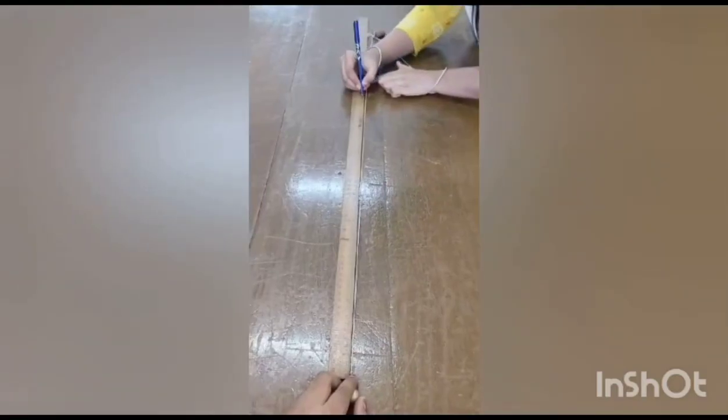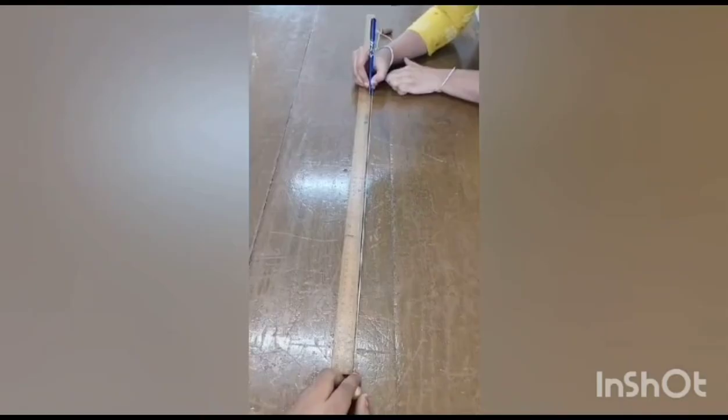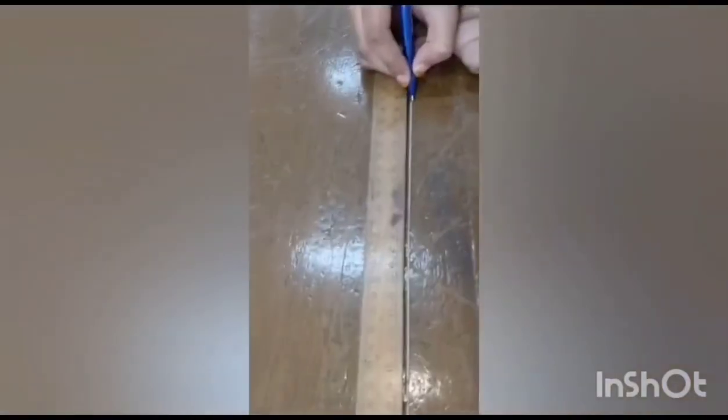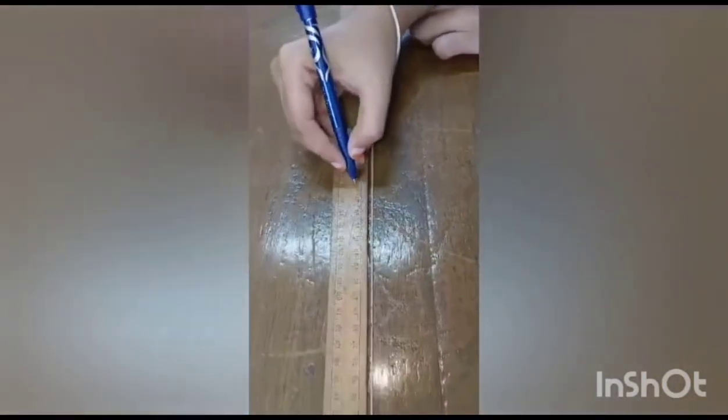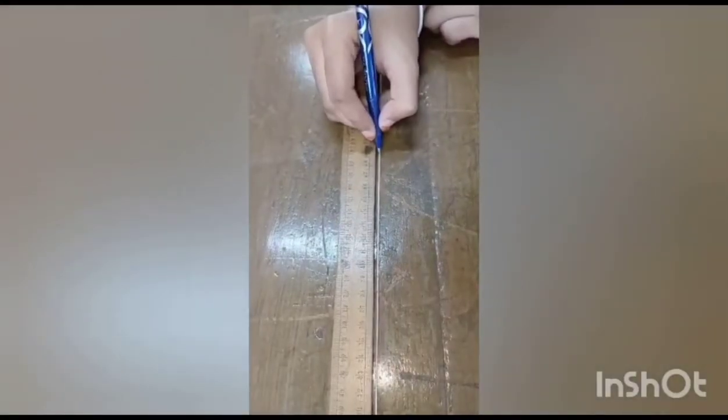Now suspend the pendulum such that L equals 20, 30, 40, 50, and 60 cm successively. For our convenience mark all the lengths on the thread by using the meter scale.